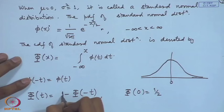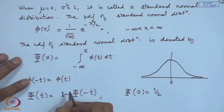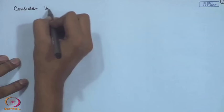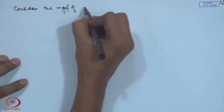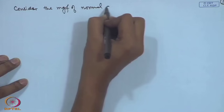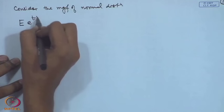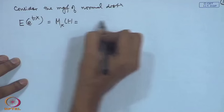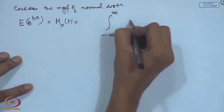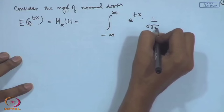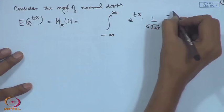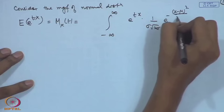Because of the linearity property, any normal distribution can be shifted to a standard normal. We prove this using the moment generating function: E[e^(tX)] = ∫_{−∞}^{∞} e^(tx) · (1/(σ√(2π))) e^(−(x−μ)²/(2σ²)) dx. Using the substitution (x−μ)/σ = z, the integral becomes e^(μt) · (1/√(2π)) ∫ e^(σtz − z²/2) dz.